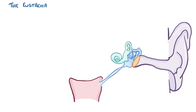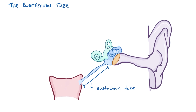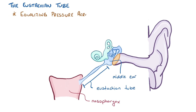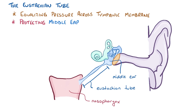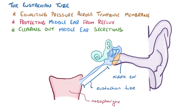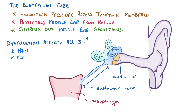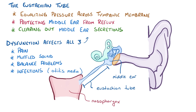Alright, as a quick recap: the eustachian tube connects the middle ear to the nasopharynx, and is useful for equalizing pressure across the tympanic membrane, protecting the middle ear from reflux, and clearing out middle ear secretions. Eustachian tube dysfunction affects all of these functions and can cause pain, muffled sound, balance problems, and can also lead to infections like otitis media.